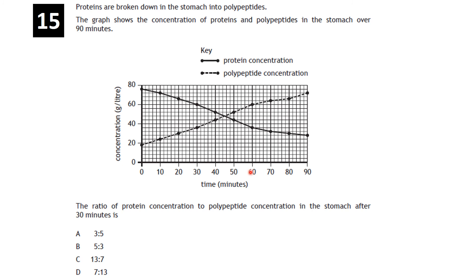Question: proteins are broken down in the stomach into polypeptides — the graph shows concentrations over 90 minutes. What is the ratio of protein to polypeptide concentration after 30 minutes? At 30 minutes, protein concentration is 60 and polypeptide concentration is 36, giving a ratio of 60:36, which simplifies to 5:3.